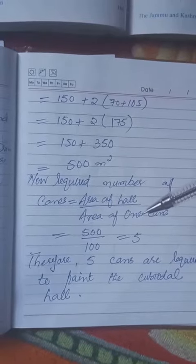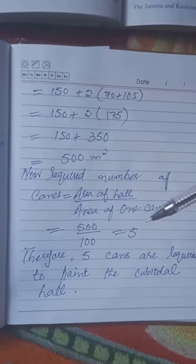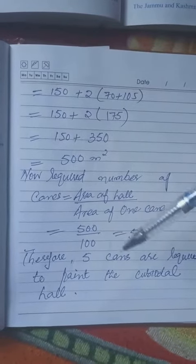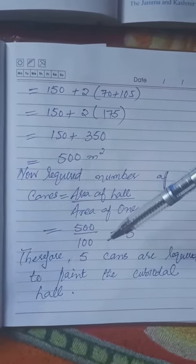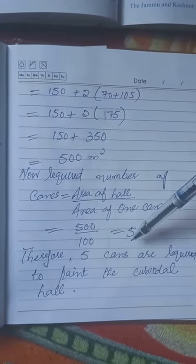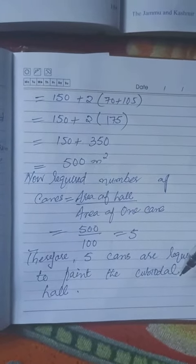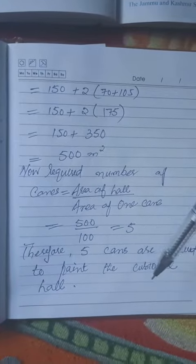Now required number of cans = area of hall divided by area of one can = 500 ÷ 100 = 5 cans.